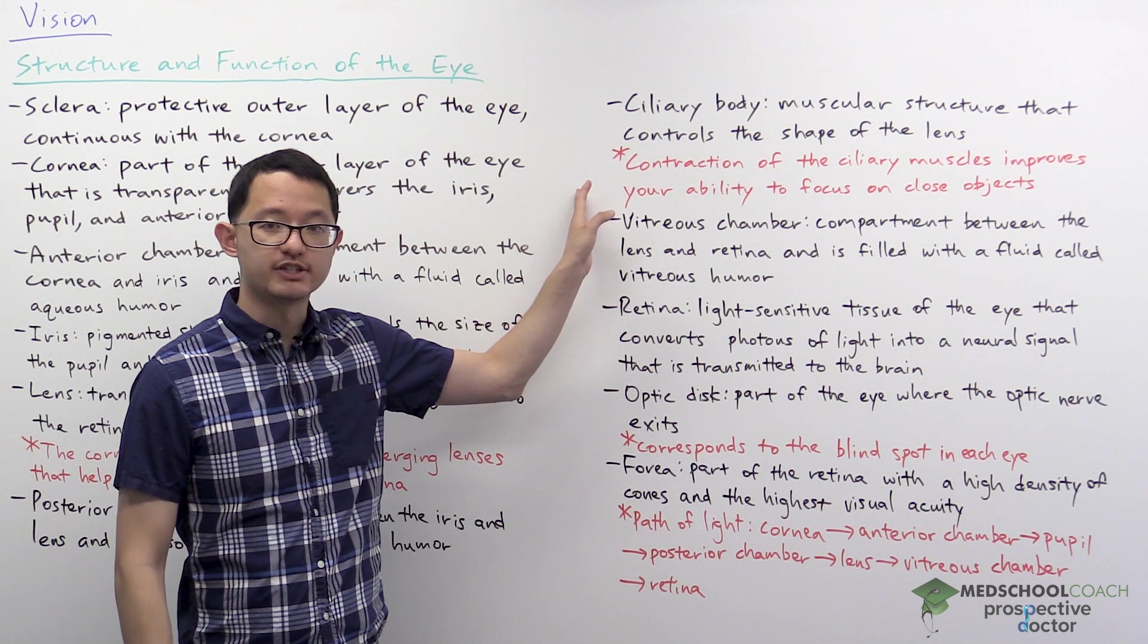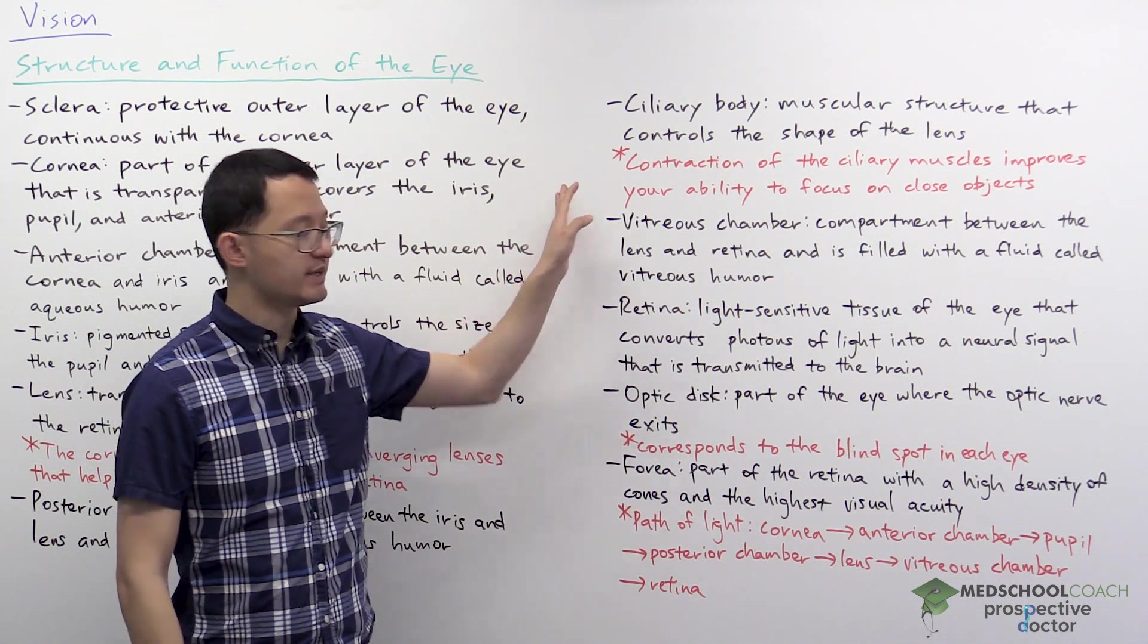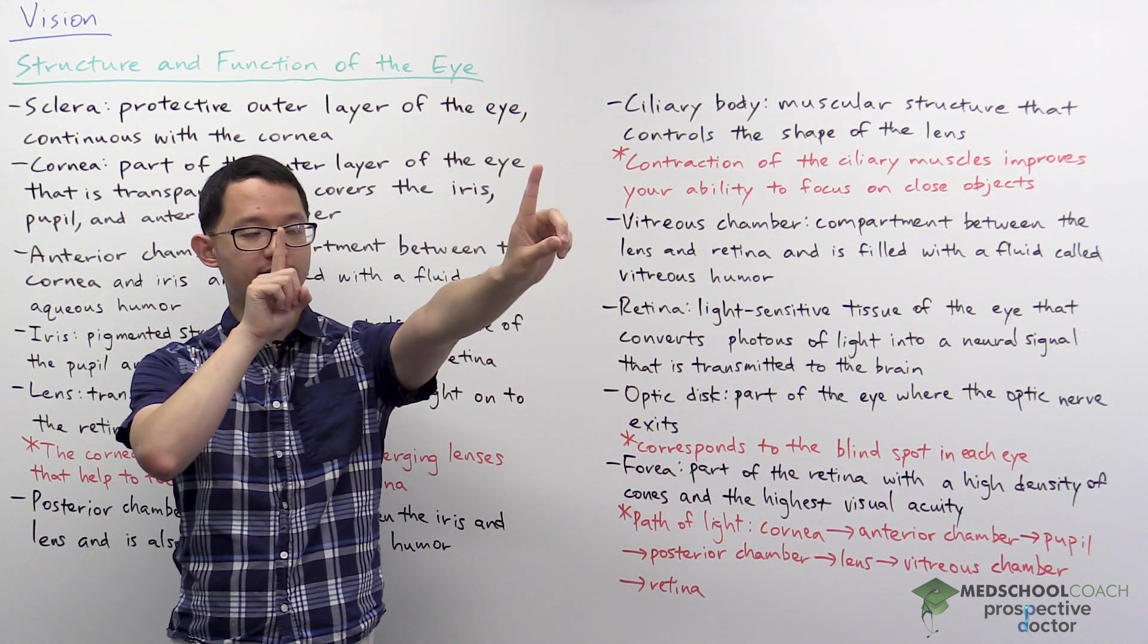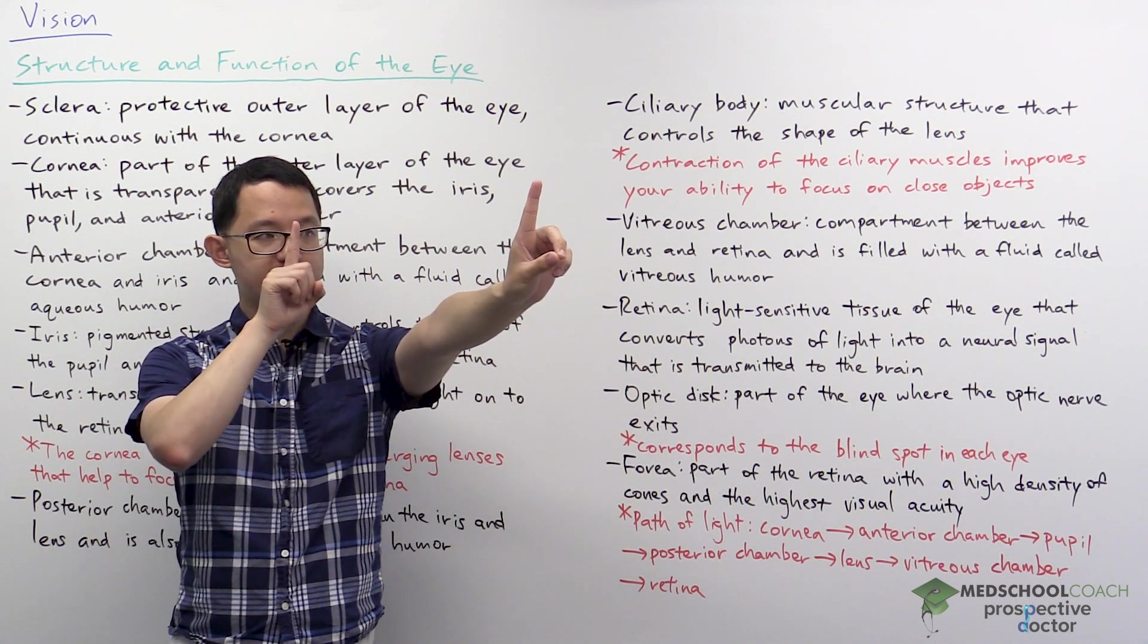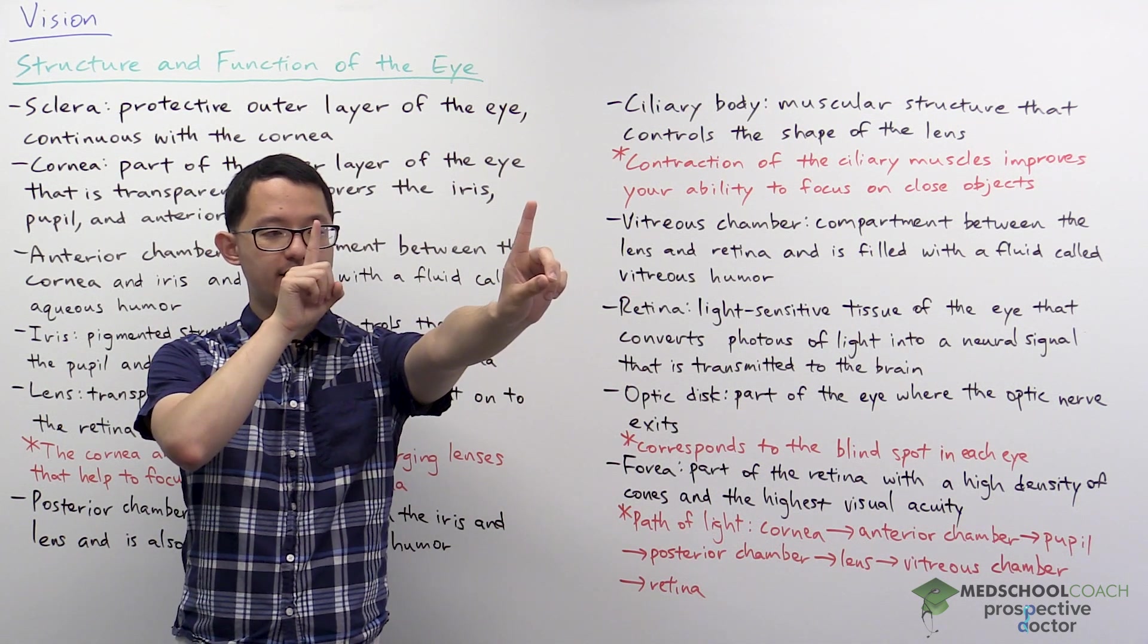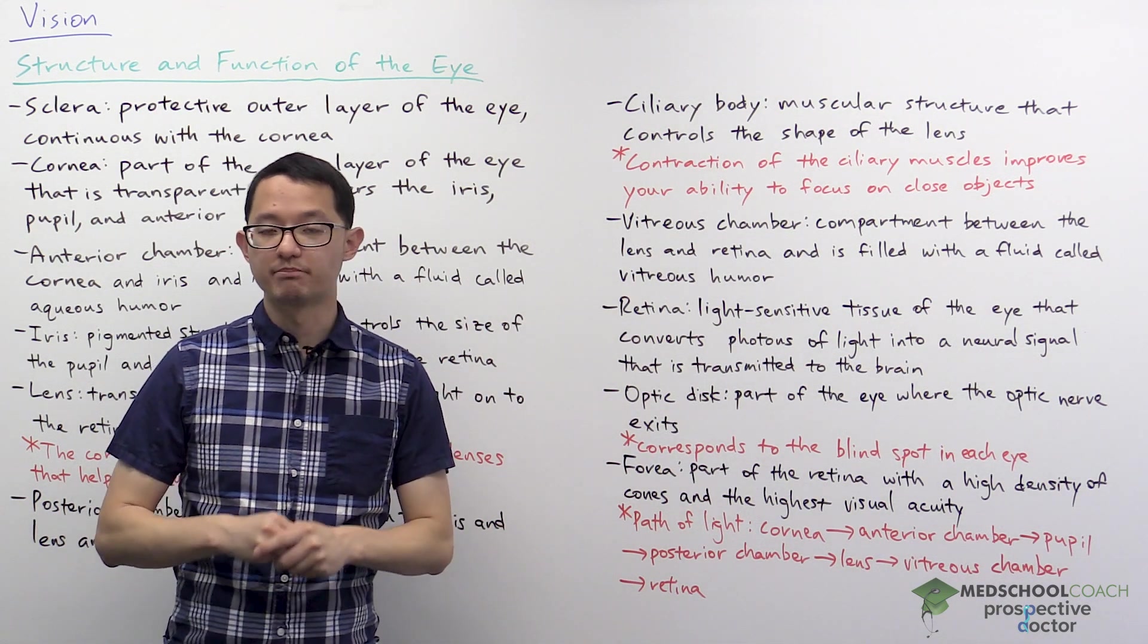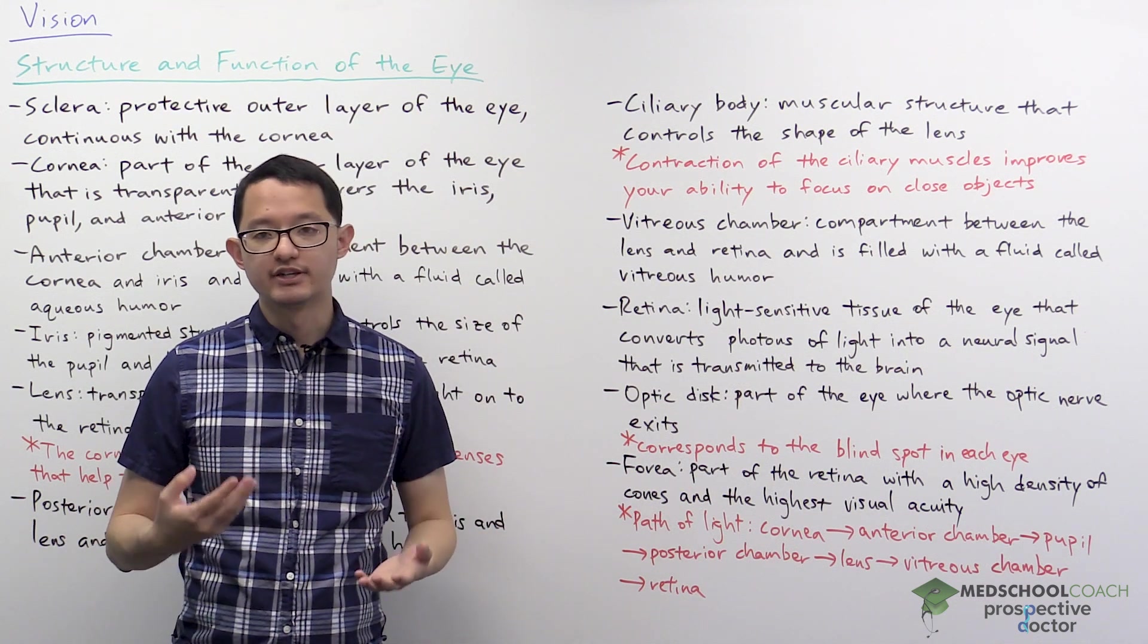This is what we call accommodation. When the ciliary muscles contract, they actually change the shape of the lens in such a way to allow you to better focus on close objects. We can do a quick demonstration. If you put your two fingers in front of you, one finger close to your face and one finger far away, you can start by focusing on the finger far away, and what you notice is the finger close to you has become blurry. If you then focus on the finger close to your face, you'll notice that the finger that is far away has become blurry. This is evidence that your ciliary body is functioning properly to allow you to focus on farther objects or closer objects by changing the shape of your lens.